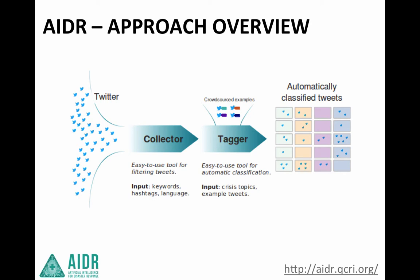All of these tweets are annotated by people, and then we use those annotated tweets to feed into an automatic tagger, or an algorithm, that uses these data to automatically classify tweets and put them into the relevant categories. The machine is able to use that human intelligence to then perform the activities that the humans can do, but much faster and in a much greater number.